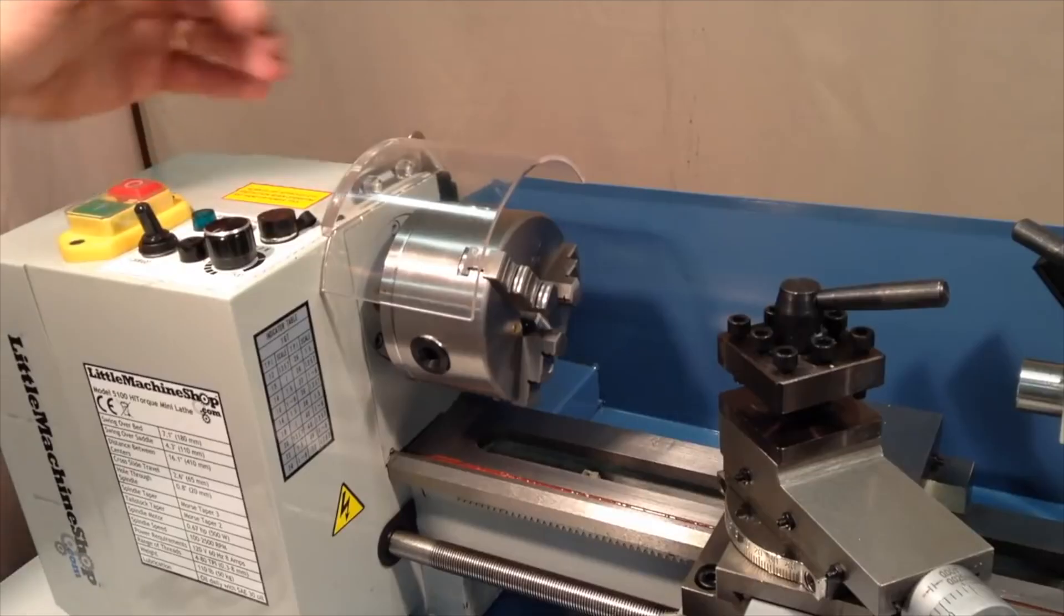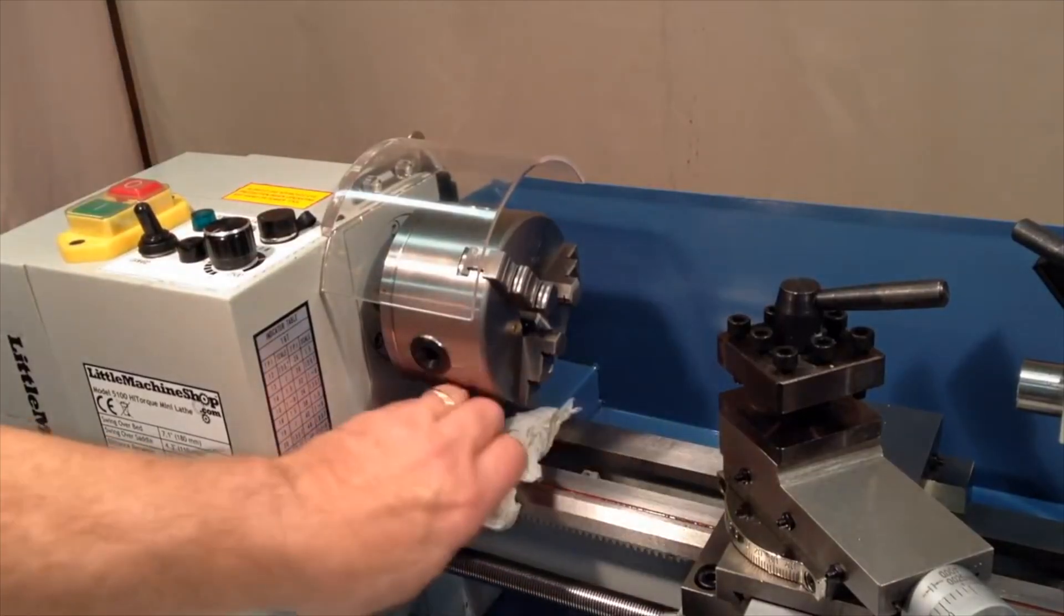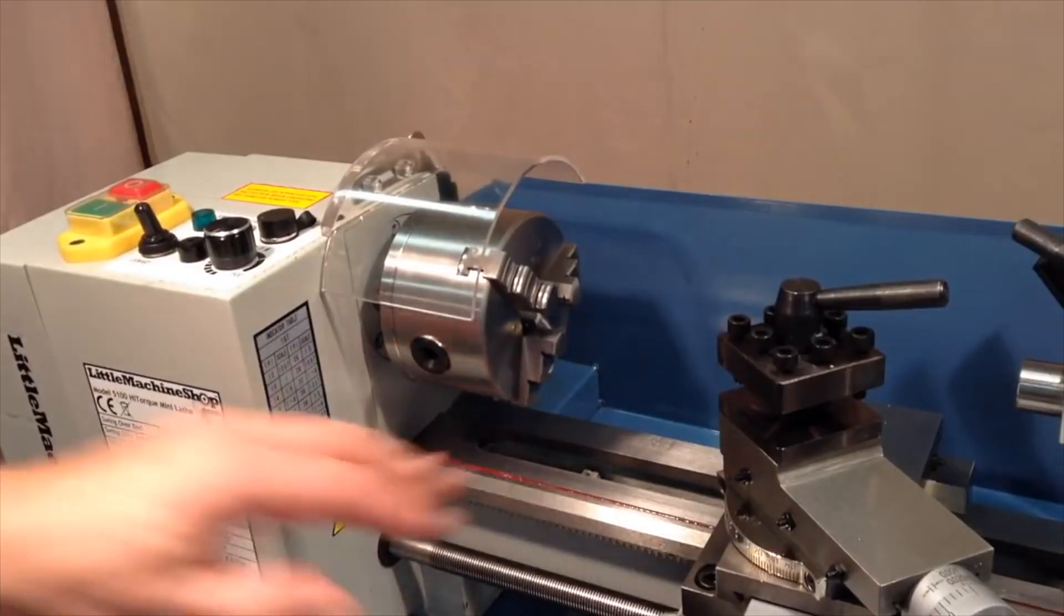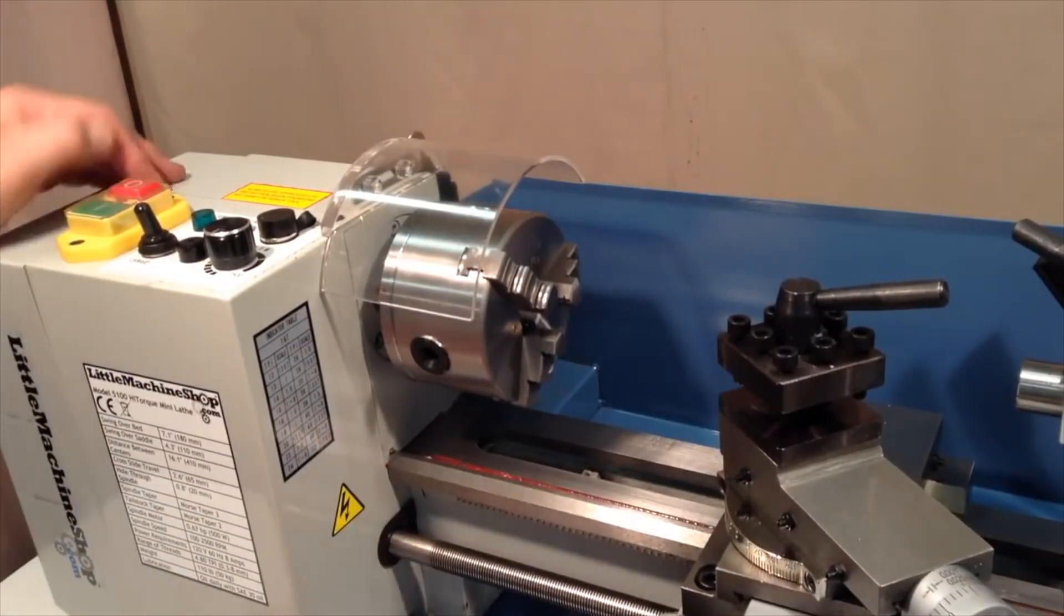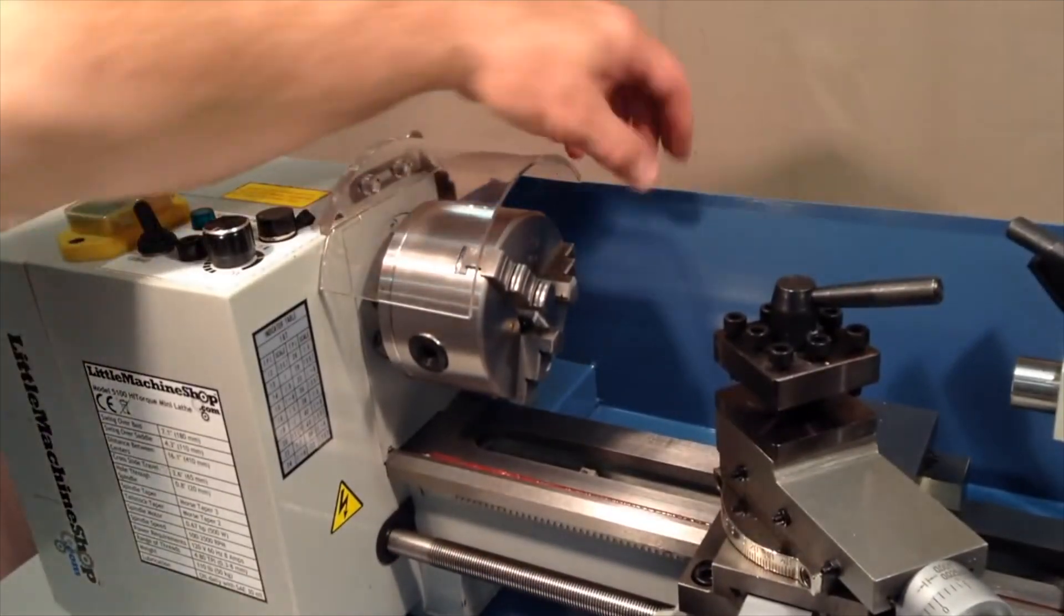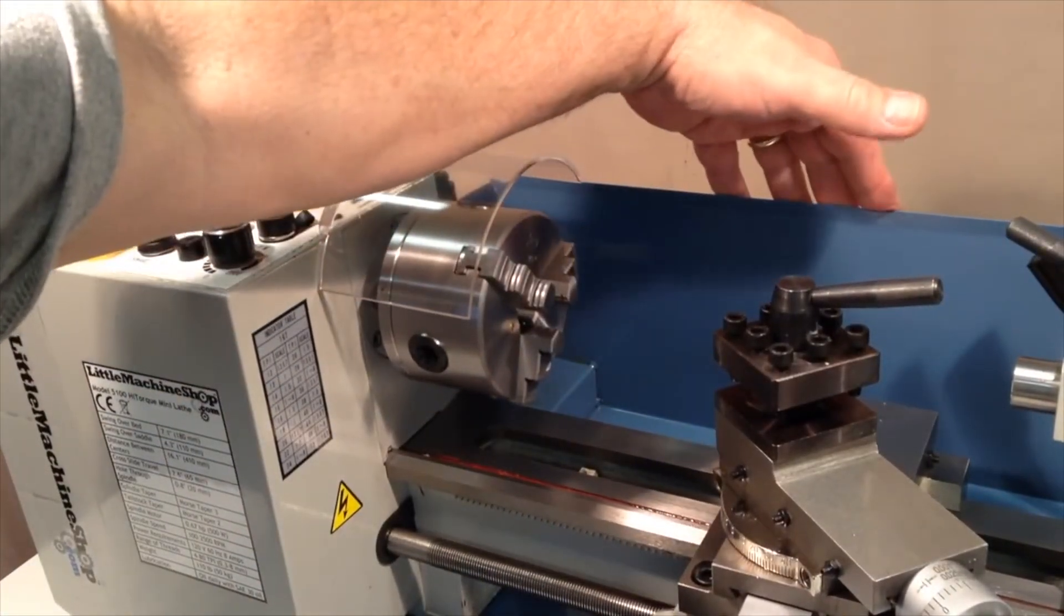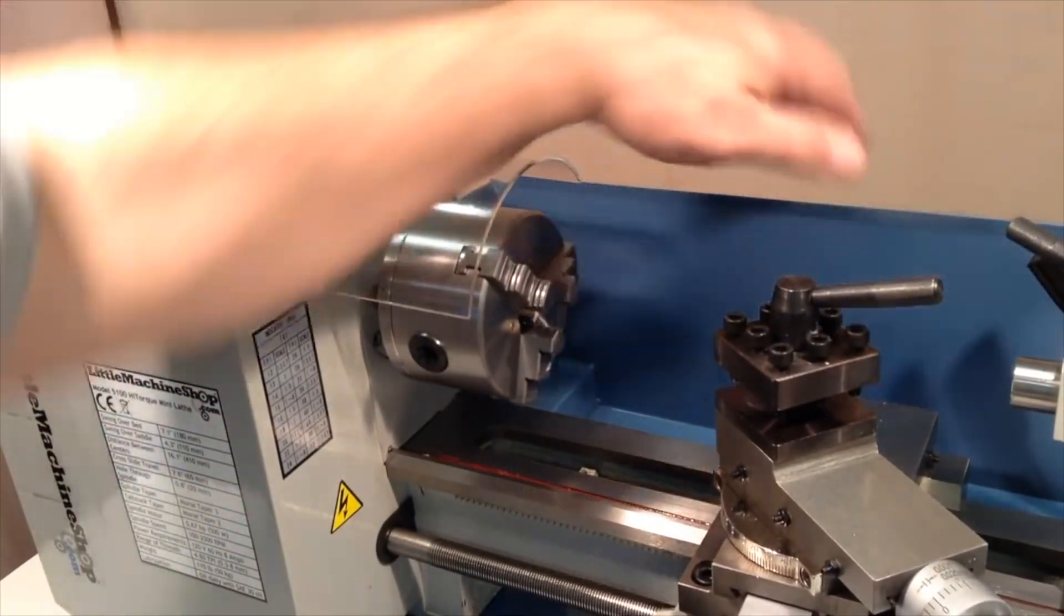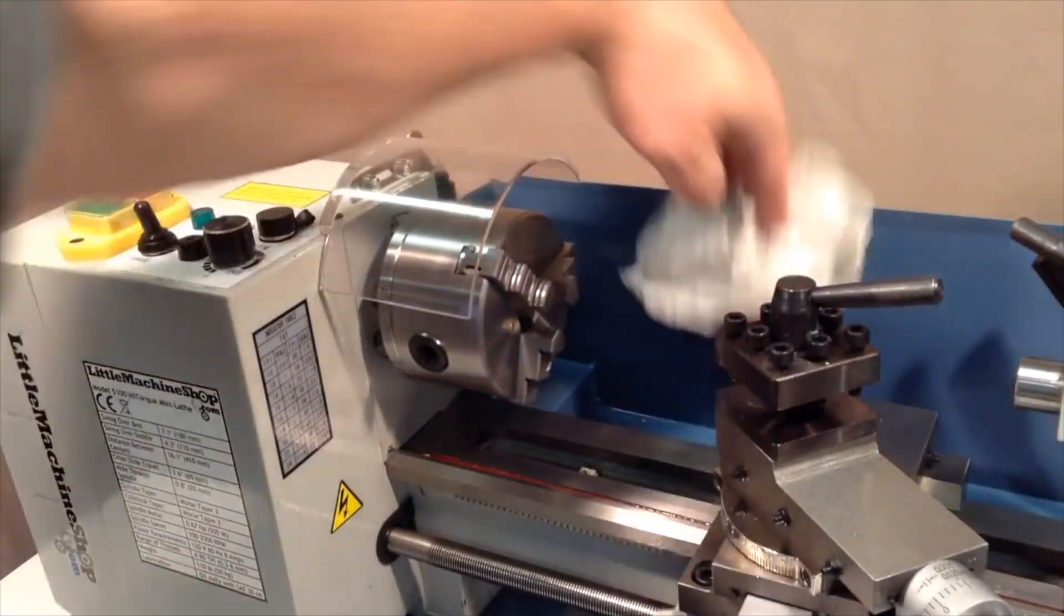The bearings wear in, the belt wears in, and as that occurs, the operating sounds get a little quieter over time. Sometimes adjusting the gears that engage the lead screw can have an effect as well. But one thing I have noticed over the years is that this chip guard along the back here actually acts like a sounding board, and it can contribute quite a lot to the overall noise level that you hear when you're operating the lathe.